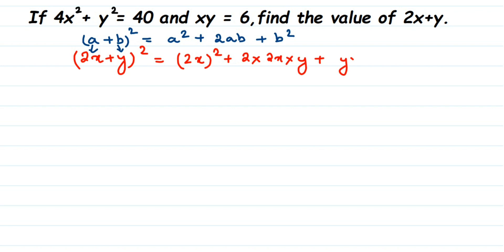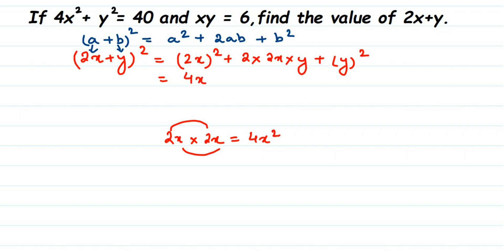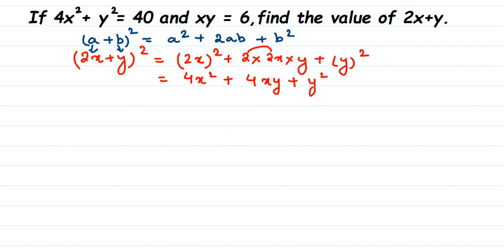Now, (2x)² means 2x × 2x, so 2 × 2 = 4 and x × x = x², giving 4x². Then 2 × 2 = 4, so we get 4xy. And b² with b = y gives y². So the expansion is 4x² + 4xy + y².